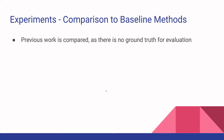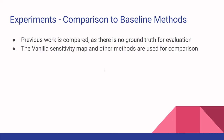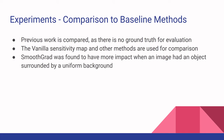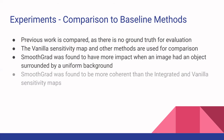One issue the authors faced was that they couldn't quantitatively evaluate their method, so they qualitatively compared it to work from other people. They compared it to vanilla maps — normal gradients that are noisy — along with integrated gradients and guided backpropagation. They found their method had more impact when an image had an object surrounded by a uniform background, and they found it more coherent than integrated and vanilla sensitivity maps, with the exception of guided backpropagation.